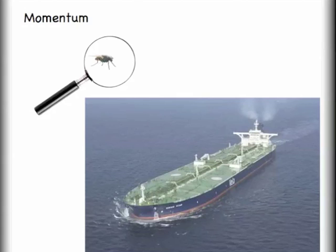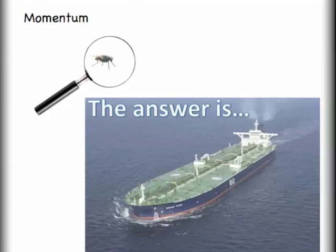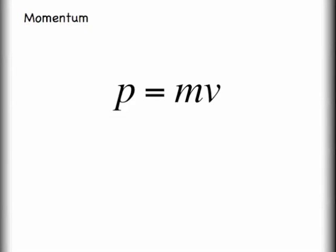Let's get a feel for what it means to have a lot of momentum. Which has more momentum, a common housefly or a supertanker? The correct answer is we don't actually have enough information. Remembering that momentum is mass times velocity, I need to know something about both the mass of an object and its velocity. Certainly it is much easier for a very massive object to gain a lot of momentum, but even a common housefly could have a large amount of momentum if it were traveling very fast.